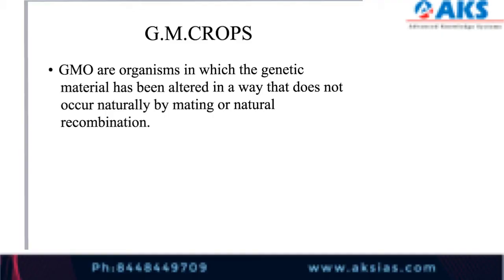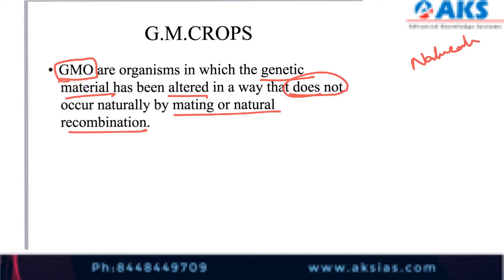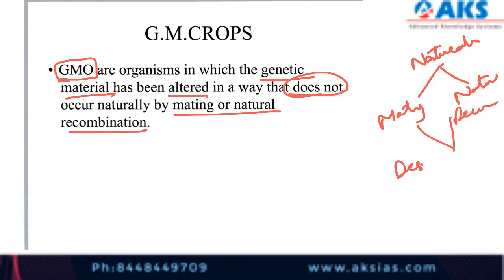Genetically modified organisms are those organisms in which the genetic material has been altered in a way that does not occur naturally by mating or natural recombination. Naturally, there are two processes — mating or natural recombination. But in both ways, the desired result is not always achieved, so we try to insert a gene for better results.